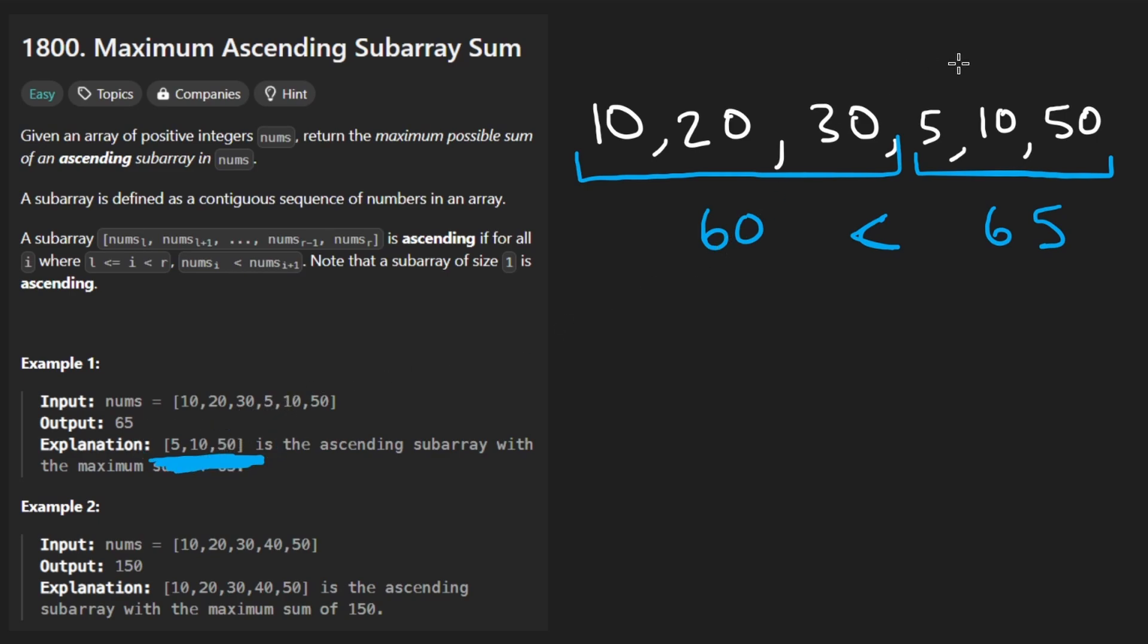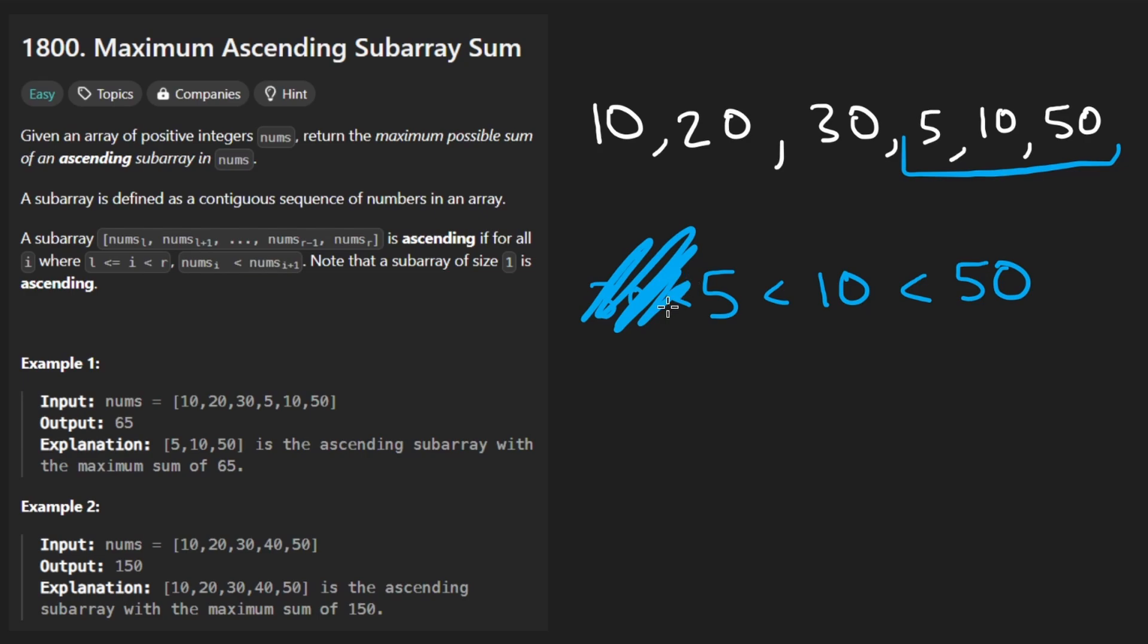And the reason for that is, the reason we can't just take the entire subarray is because we want to ensure that for the subarray that we choose, in this case, this one, that the elements are in strictly increasing order. They use the word ascending order. So 5 is less than the next element, which is 10, which is less than the next element, which is 50. If we try to add the 30, we see that that no longer holds. We cannot include the 30.